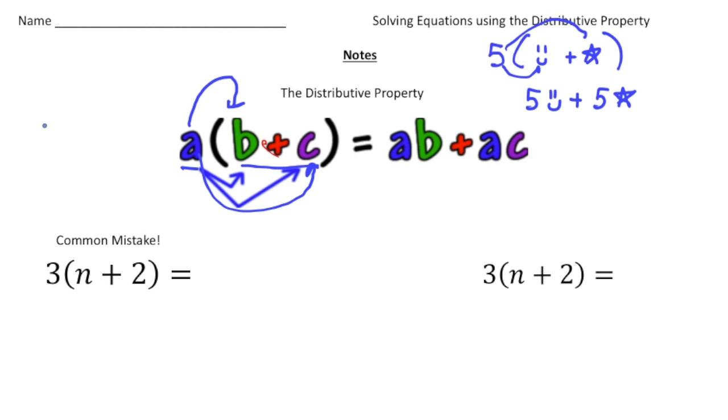Now here's a common mistake. People often, like for example, down here, we have three times n plus two. People often do the three times the n, which gives you three n. But then they just add the two, like a plus two.